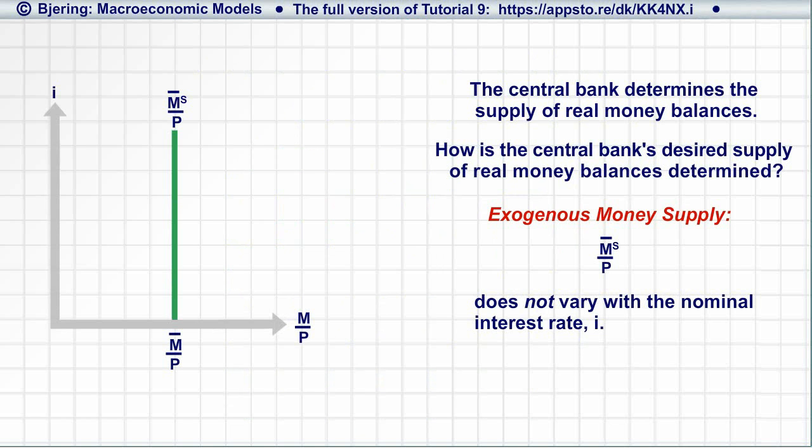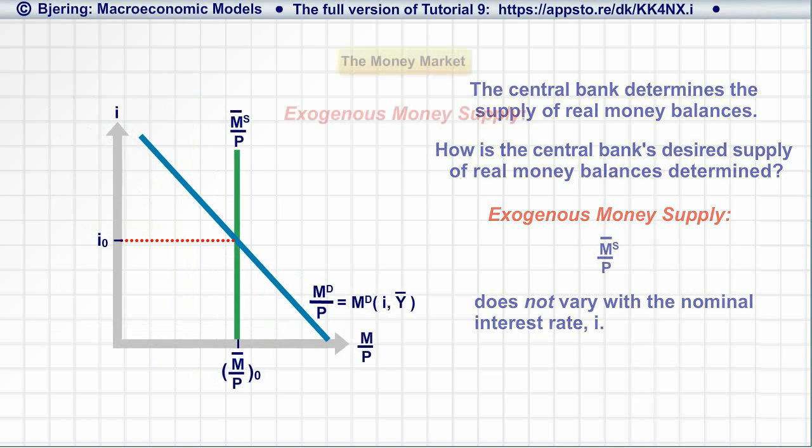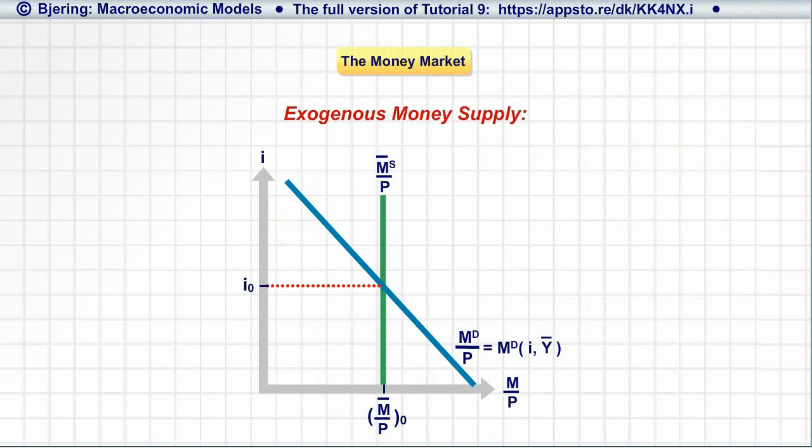Now, we reintroduce the demand curve for real money balances, as in this graph of the economy's money market. Here, the central bank determines the supply of real money balances, leaving it to market forces to generate the interest rate that makes interest earnings foregone from holding a money supply of M bar over P sub 1 acceptable to people.